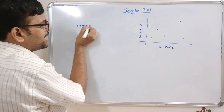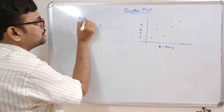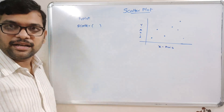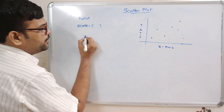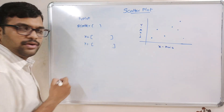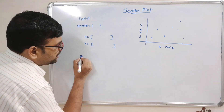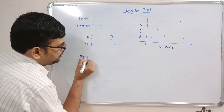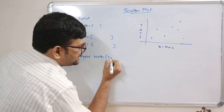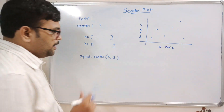To draw a scatter plot, we use the scatter function, which should be called with the help of pyplot - pyplot.scatter. Here we need to provide the x-axis and y-axis values. Give the x-axis and y-axis to pyplot.scatter and automatically we'll get the plot.